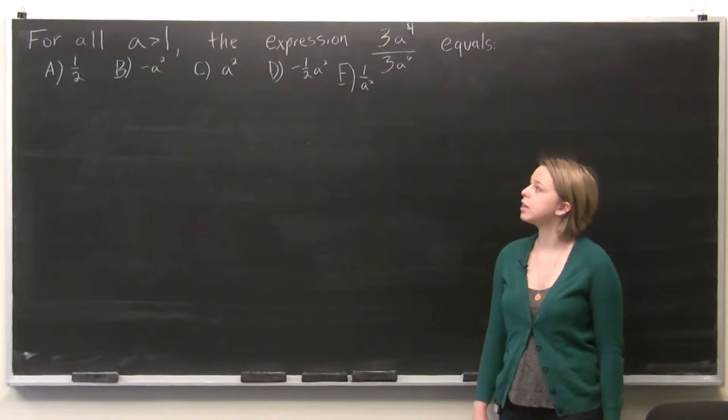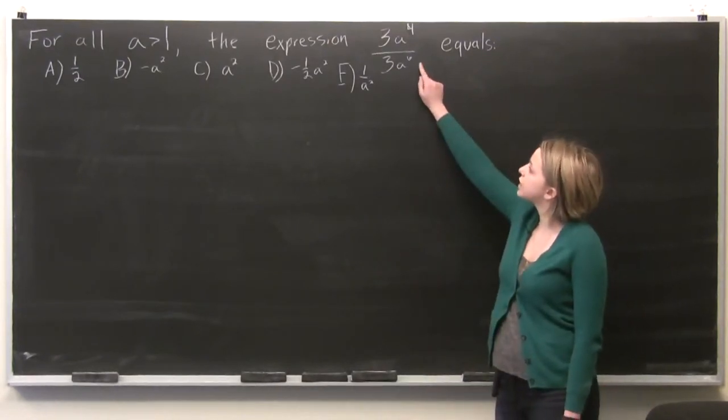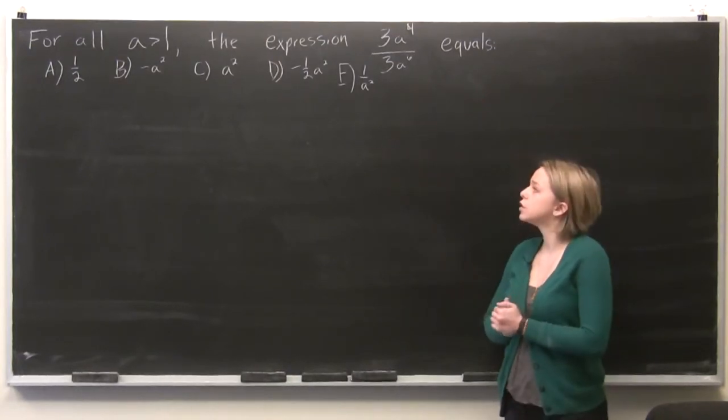So our question reads, for all a is greater than 1, the expression 3a to the 4th over 3a to the 6th is equal to one of these answer choices.